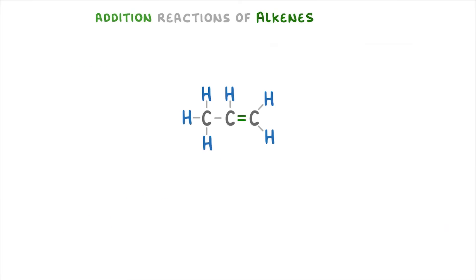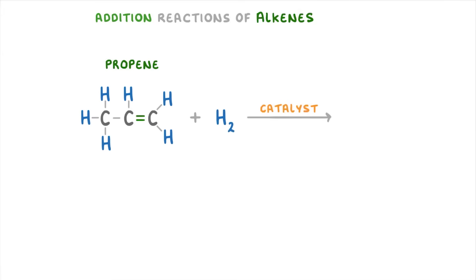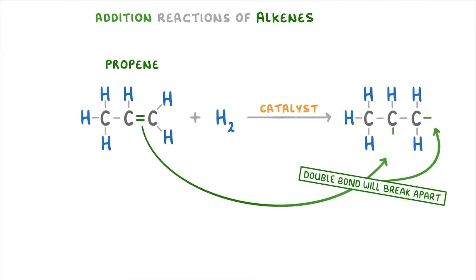Let's start with hydrogen. The alkene we have here is propene because it's a three-carbon chain. If we add hydrogen gas and supply a catalyst, the double bond between the carbon atoms will break apart and the hydrogen atoms will then be able to bond to those carbons.